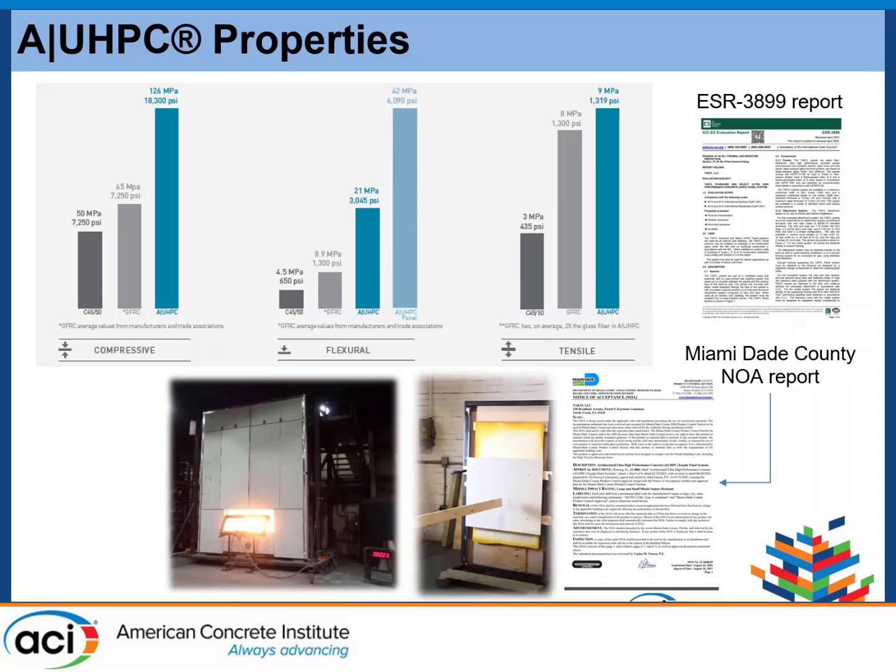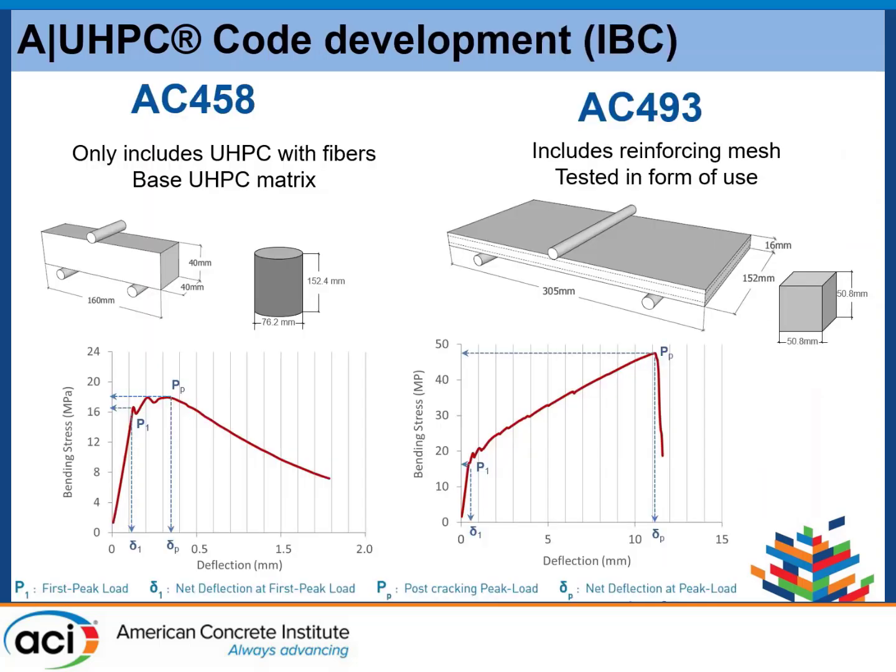What building codes can you use right now for designing with this material? There are two options. You can use the fiber cement standard AC90, but that is very conservative and was developed for a material that is somewhat downgraded compared to a high-performance material. Under the International Building Code, there are two acceptance criteria. One is AC458.